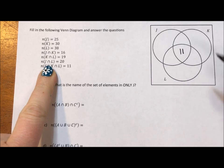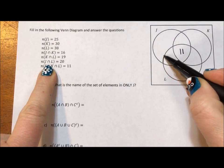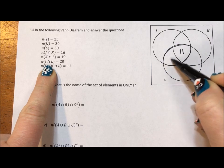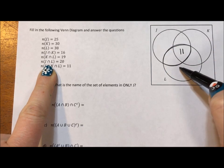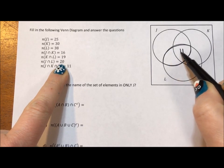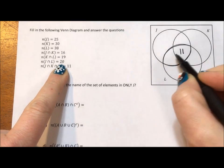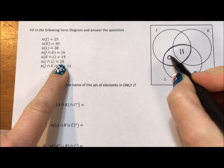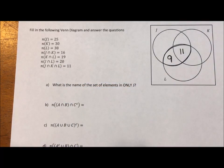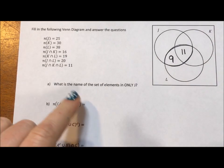The intersection of J and L, that would be this little leaf, these two regions are what J and L share, is 20. This isn't 20, the two together are 20, which means this region has to have nine elements, because 9 plus 11 is our 20. So there's going to be a lot of subtraction going on.